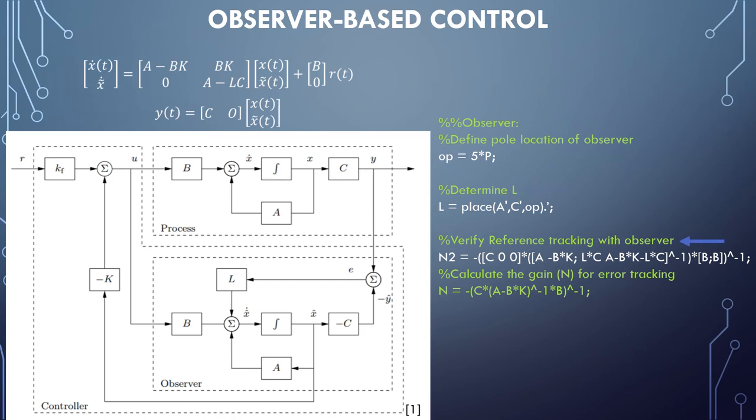The final computation here is not essential to this. It simply uses the new system dynamics to calculate the reference tracking gain to see that it hasn't changed from earlier. It's just included here as sort of a double check on work that's been completed.